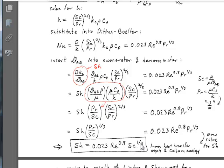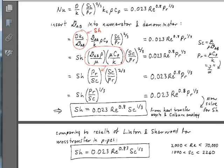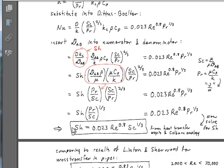Notice what happened is that the Chilton and Colburn analogy converted a correlation that initially looked like this. I have Nusselt and Prandtl to the one-third, and all that ended up happening was that I ended up with a Sherwood and a Schmidt to the one-third.